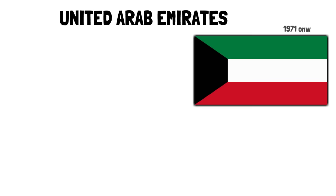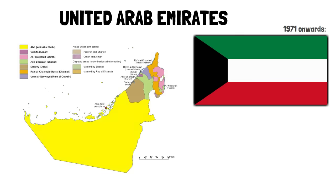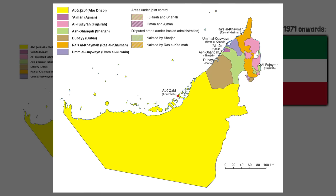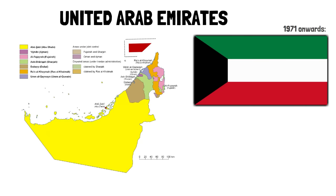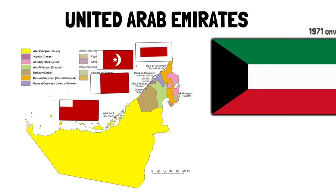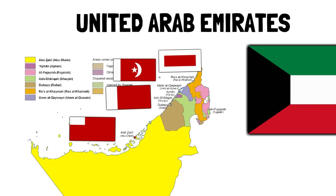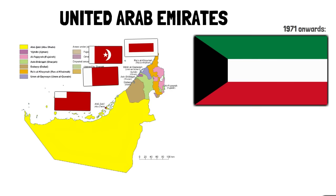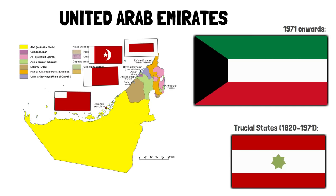The UAE flag is, again in similarity to Kuwait, a variation of the pan-Arab flag, being adopted in 1971. The UAE is precisely a union of Arab Emirates, each of which had their own flags prior to the union. The Emirate of Ra's al-Khaimah, for instance, had a white and red flag. Dubai used the same colors, as did Ajman, Umm al-Quwain, and Abu Dhabi. From 1820 to 1971, these tribes were somewhat organized into a group of tribal confederations called the Trucial States, and they used a different flag.